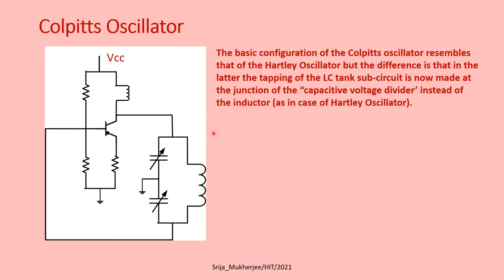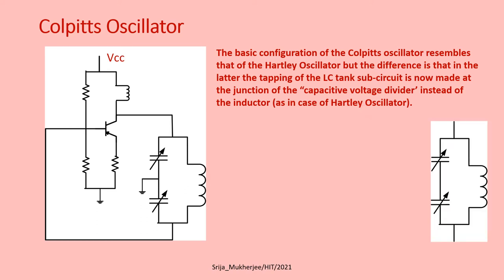The basic configuration of the Colpitts oscillator resembles that of the Hartley oscillator. But the difference is that in the Colpitts oscillator, the tapping of the LC tank sub-circuit is made at the junction of a capacitive voltage divider — between two capacitors — instead of at the inductor as in the Hartley oscillator.